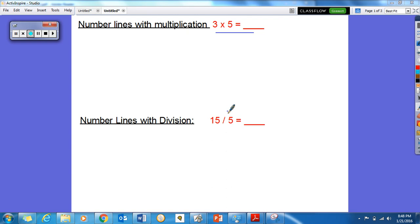But first, let's remind ourselves how to use number lines with multiplication and division. So first, let's review 3 times 5 equals blank. Now with multiplication, we know that 3 would be our hops, and 5 would be what we are skip counting by on our number line. So let's go ahead and make it.